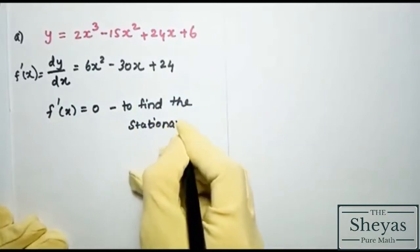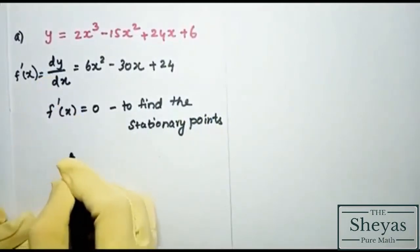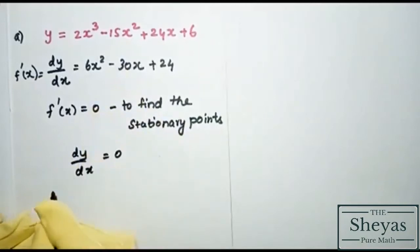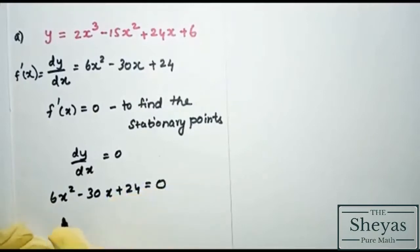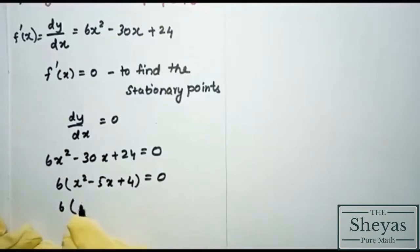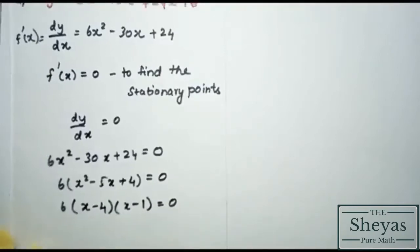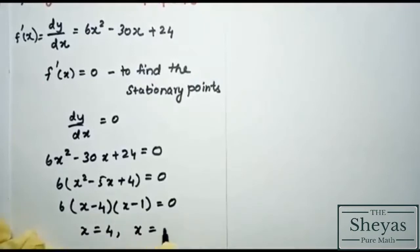To find the stationary points, we set dy/dx = 0, giving 6x² − 30x + 24 = 0. Dividing by 6 gives x² − 5x + 4 = 0, which factorizes as (x − 4)(x − 1) = 0, so x = 4 and x = 1.